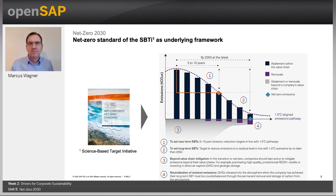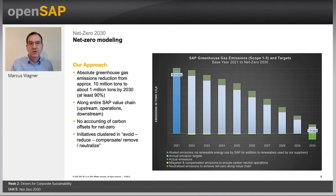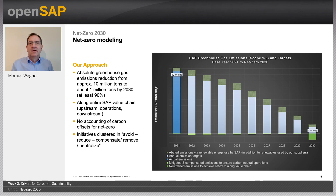Net zero refers to a state in which the greenhouse gases going into the atmosphere are balanced by permanent removals out of the atmosphere. SAP has committed to achieve net zero along our value chain, in line with a 1.5 degrees Celsius future in 2030 — 20 years earlier than originally targeted. Greenhouse gas emissions are divided into three scopes: scope one, direct emissions from owned or controlled sources; scope two, indirect emissions from the generation of purchased energy; and scope three, all other indirect emissions in your value chain, including upstream and downstream.